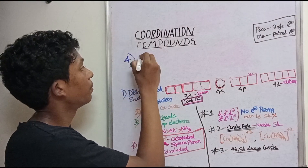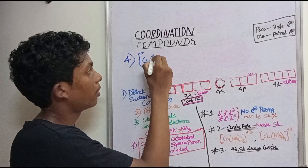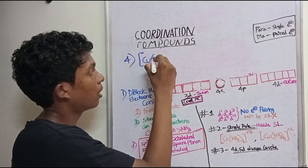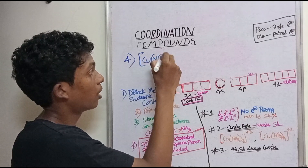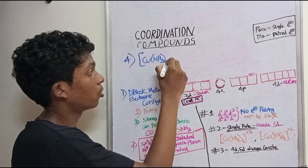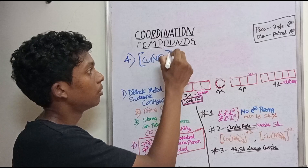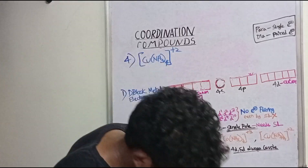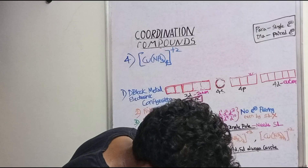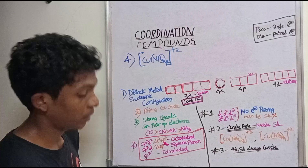This fourth example is very important. The compound is copper tetra-amine, [Cu(NH₃)₄]²⁺, with a charge of plus 2.